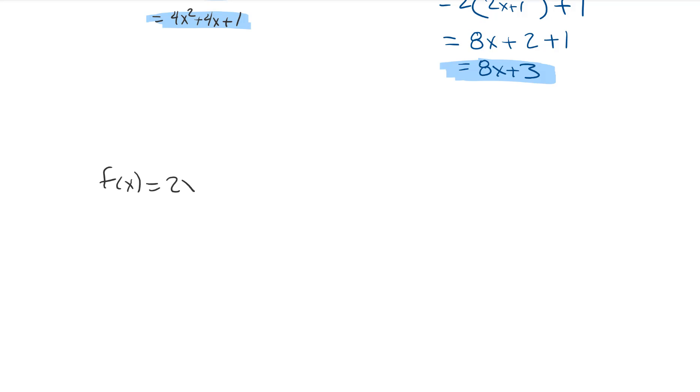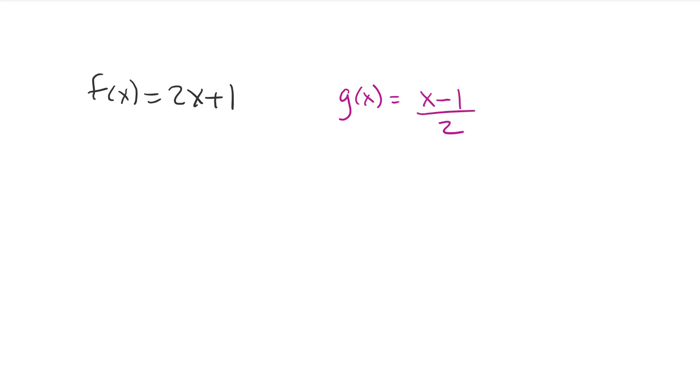Say f of x is still equal to 2x plus 1. Now I'm going to say that g of x, that's equal to x minus 1 all over 2. Now there's this concept of an inverse. An inverse is the opposite process.